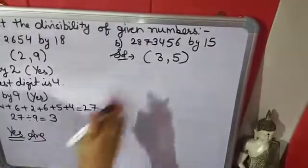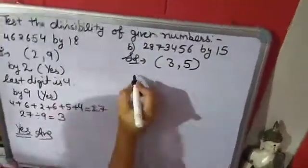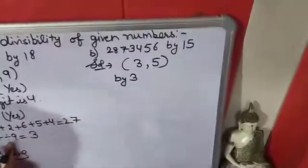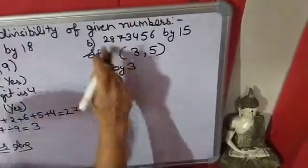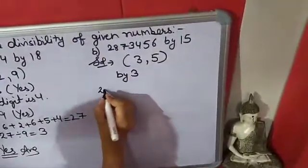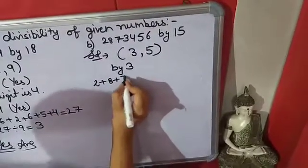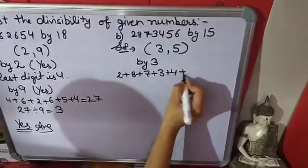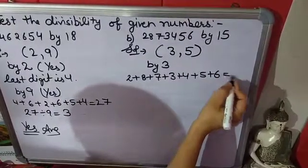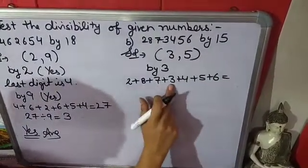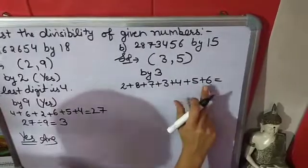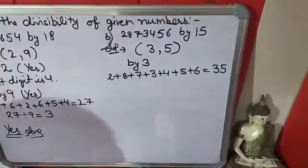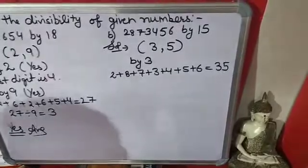Now B part: we check if the number is divisible by 3 and 5. The rule of 3 is the same as the rule of 9 — add all digits: 2 plus 8 plus 8 plus 7 plus 3 plus 4 plus 5 plus 6, giving 10, 17, 20, 24, 29, and 35. But 35 is not divisible by 3.